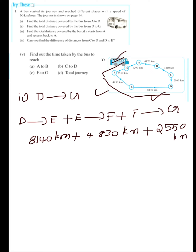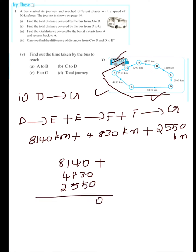Now you have to add all these things: 8140 plus 4830 plus 2550. Adding: 0, carry 1, 12, carry 1, 15, carry 1, 15 — so the answer is 15,520 km. The total distance covered by the bus from D to G equals 15,520 km.